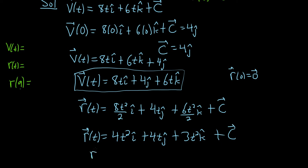Last thing to do is plug in 0. So when you plug in 0, you're going to get 0 i hat plus 0 j hat plus 0 k hat plus C equals 0. So C is equal to the 0 vector. You just get C equals 0.